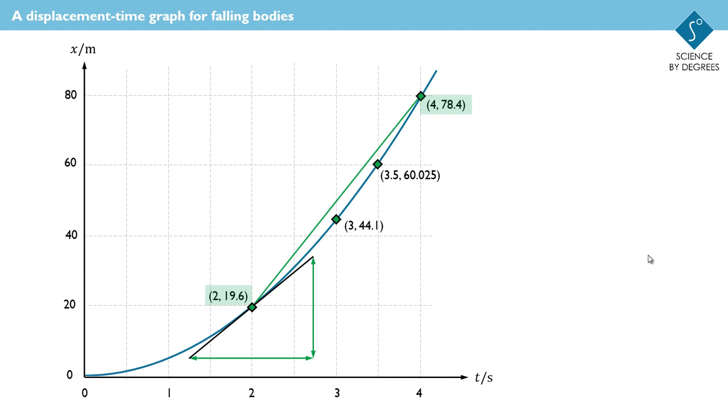So the gradient of that line is the change in displacement divided by the change in time, so that's the difference between 78.4 and 19.6 divided by the difference between 4 and 2, and you get an answer for the gradient of that green line of nearly 30 metres per second. But that's not a very good approximation to the gradient of the black line. How do we get a better one?